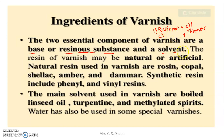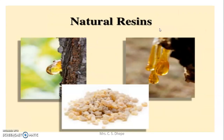The resin of varnish may be natural or artificial. Natural resin is like the gum or tree resin — also called 'dink' in Marathi. Artificial resin includes vinyl resin or phenol resin. These resins are dissolved in oil or volatile solvent to make varnish. The main solvents used in varnish are boiled linseed oil, turpentine, or methylated spirit.